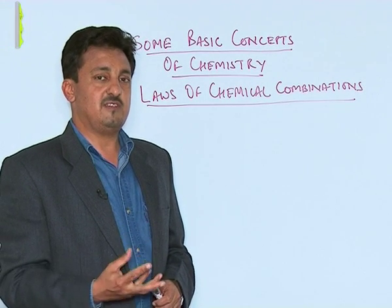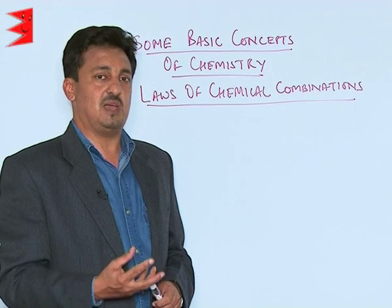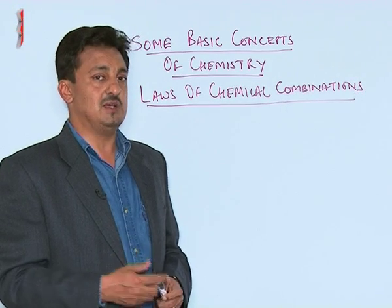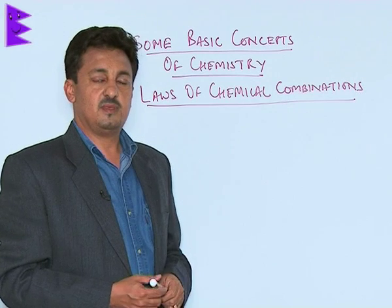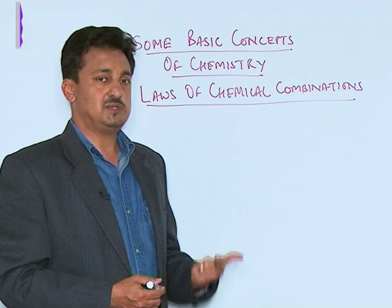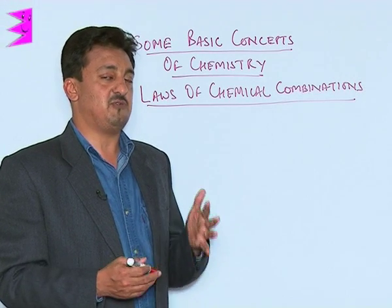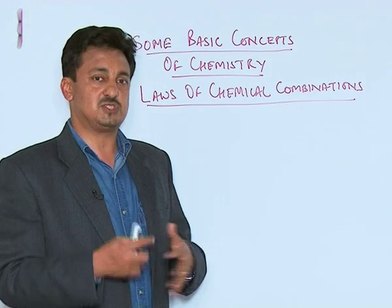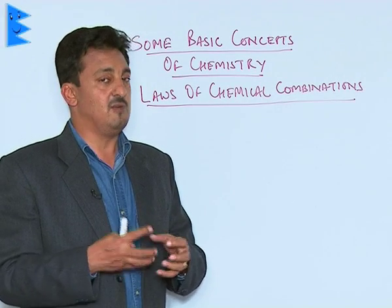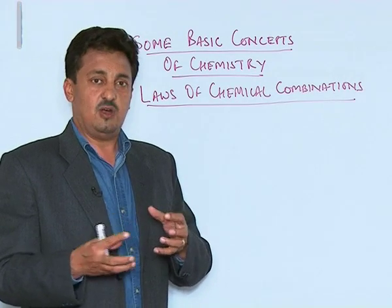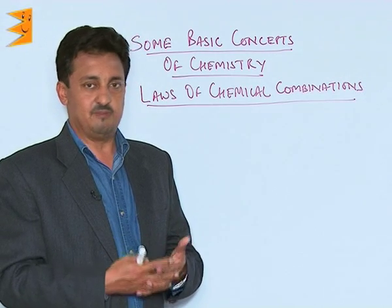The first thing to be made very clear in this chapter are the laws of chemical combinations. These are the basic five laws which tell us how the atoms and molecules of different substances combine with each other to form new compounds.